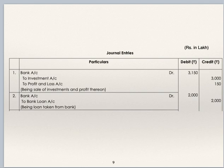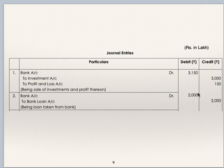First journal entry is for sale of investment and loan raised. Don't forget to mention on top: Rs in lakhs. Bank account debit 3150 to investments 3000, to profit and loss account 150. They have sold investments and the profit on sale is transferred to profit and loss account. They have raised bank loan, so bank account debit to bank loan is the next journal entry.